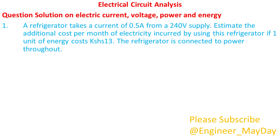A refrigerator takes a current of 0.5 amperes from a 240 volt supply. Estimate the additional cost per month of electricity incurred by using this refrigerator if one unit of energy costs 13 shillings. The refrigerator is connected to power throughout.